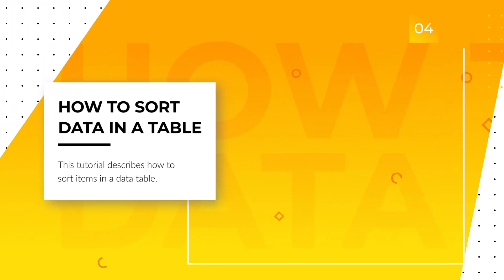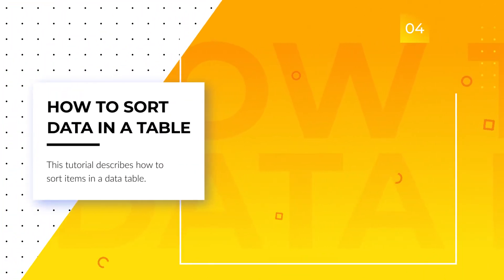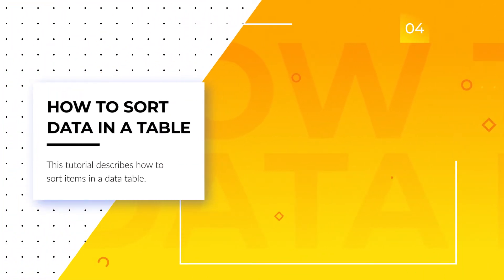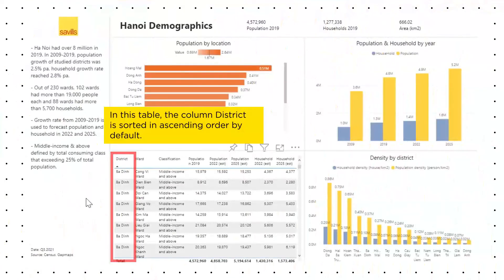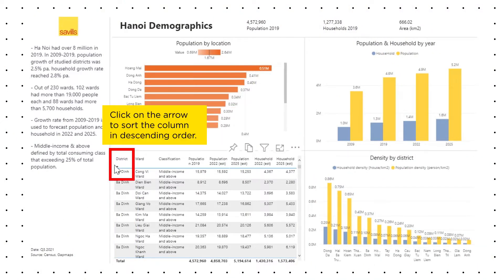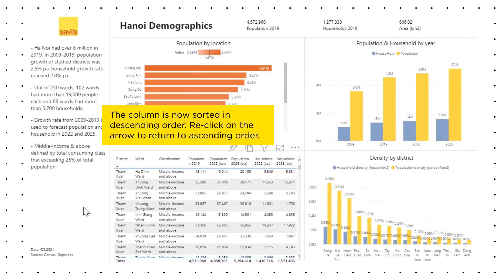How to Sort Data in a Table. In this table, the column District is sorted in ascending order by default. Click on the arrow to sort the column in descending order. The column is now sorted in descending order. Re-click on the arrow to return to ascending order.